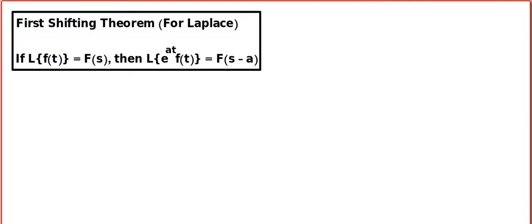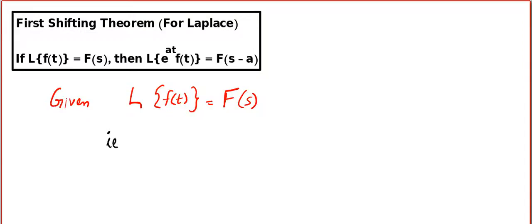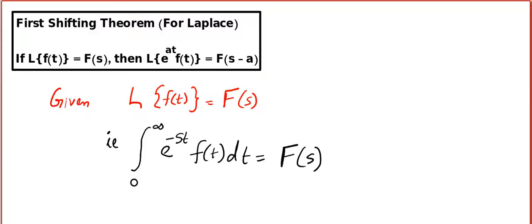Shall we start? Now, look at this. It is given that Laplace of f of t is F of s. So that is exactly where I am going to start. I am going to write: given, Laplace of f of t is equal to capital F of s. Now let me ask you one question — do you still remember the definition of Laplace transform? Do you still remember Laplace transform was an integral? I want the raw definition we learned in lesson number 1. The Laplace is actually: integral from 0 to infinity of e power minus st into f of t dt, equals F of s. So, let us call it equation number 1.